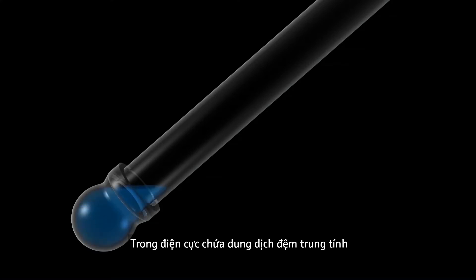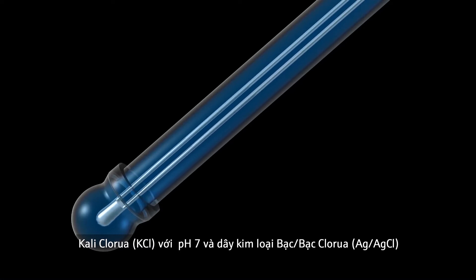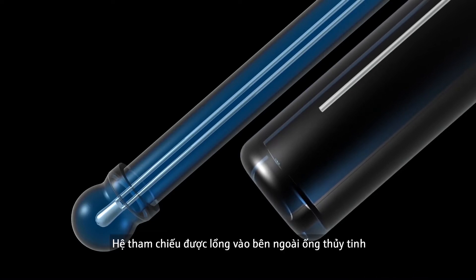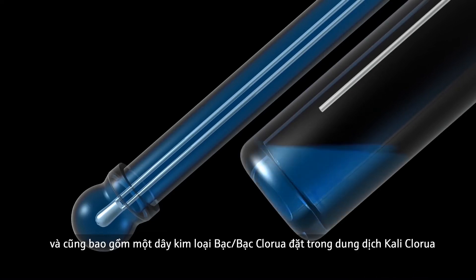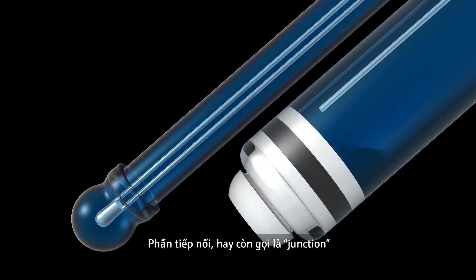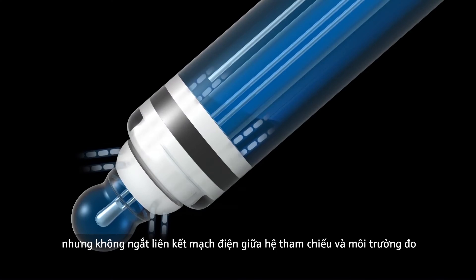The electrode is filled with a neutral potassium chloride solution buffered at pH 7 and contains a silver-silver chloride wire that forms the electrical connection. The reference system is located in the outer glass tube and also consists of a silver-silver chloride wire in a potassium chloride solution. A so-called junction protects the reference system from the medium to be measured without disconnecting the electrical connection between them.